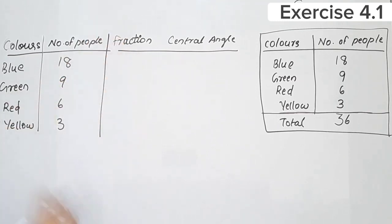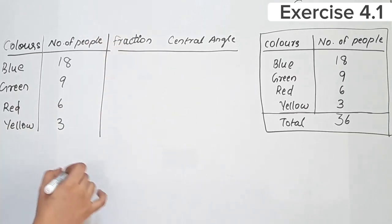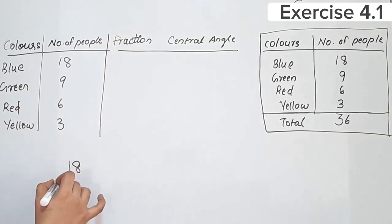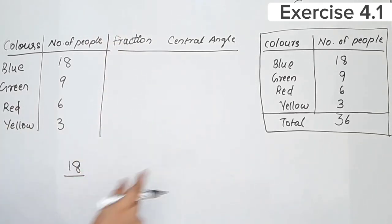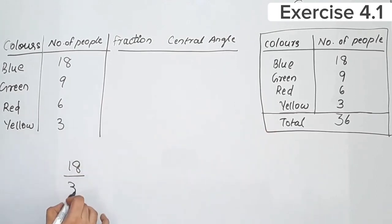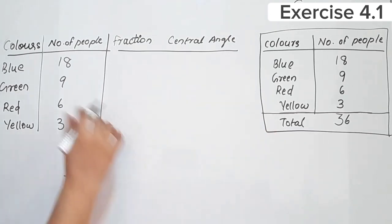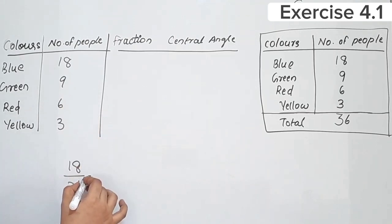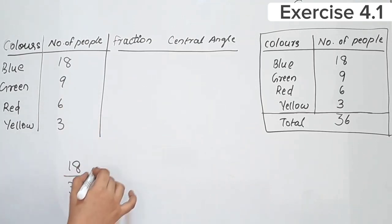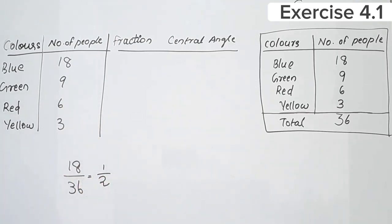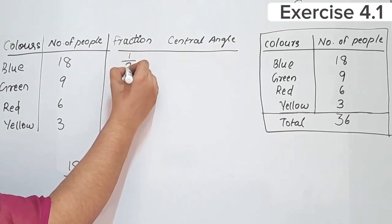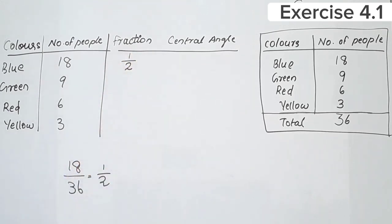The fraction is calculated as number of people divided by total number of people. The total number of people is 36. For blue, the fraction is 18 by 36, which simplifies to 1 by 2. So blue's fraction is 1 by 2.